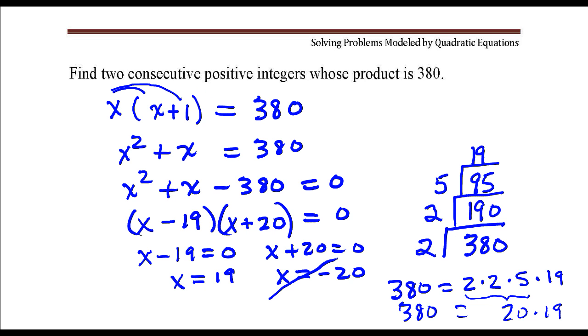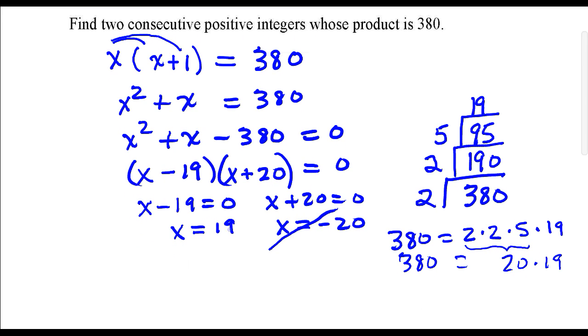it says find two consecutive positive integers, and negative 20 is not positive, so we just throw that out. So the only answer we're going to work with is 19, and the next consecutive integer would be, of course, 20. And that's it.